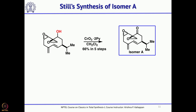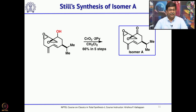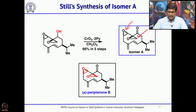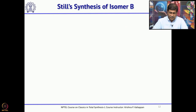This ketone: none of the spectral data match with Periplanone B, obviously because both epoxides are opposite to the natural Periplanone B — here the epoxide is beta and the CH2 is beta. So he had to go back, still not knowing whether the epoxide stereochemistry was correct or not.